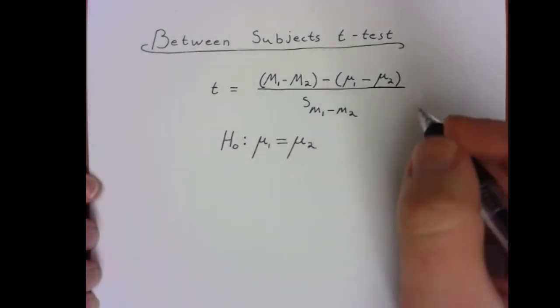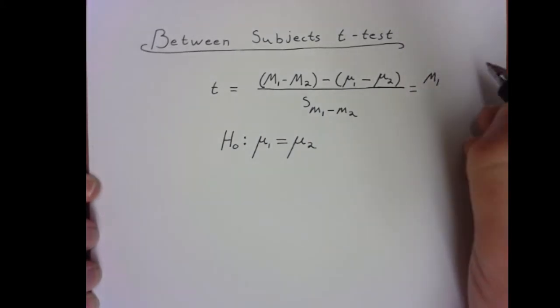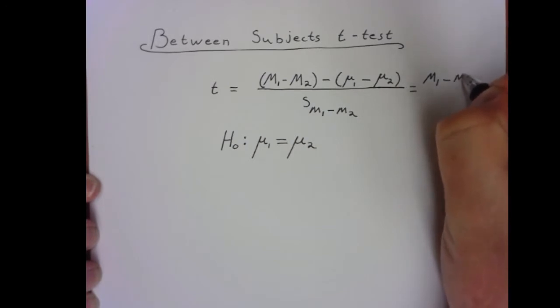So really, when we break this down and look at it, what we have is the mean of sample 1 minus the mean of sample 2 divided by our new standard error.